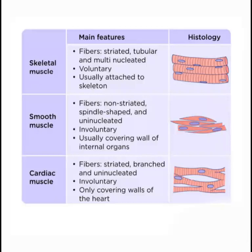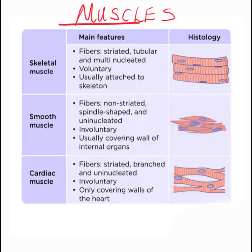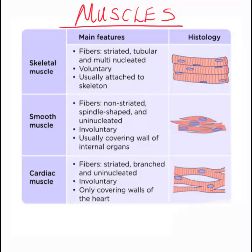Welcome to this video. We look at muscles — something that you might have heard of. When we say muscles, what do we mean? A muscle is a tissue made up of cells. We have three categories of muscles: skeletal muscles, smooth muscles, and cardiac muscles.